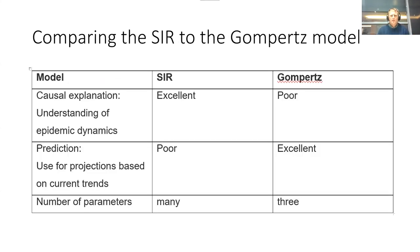Comparing the SIR model to the Gompertz model: in terms of causal explanation, I believe the SIR model is excellent. In terms of causal explanation, the Gompertz model is poor. But in terms of prediction, and this is now more for short-term projections based on current trends, the SIR model is poor. It has multiple parameters. It's not ideal for projections. But the Gompertz model is excellent.